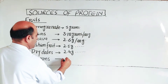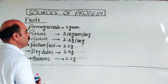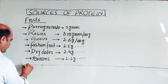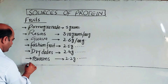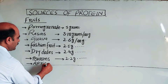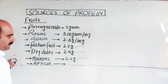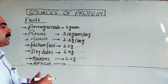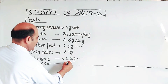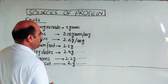Prunes contain 2.2 grams of protein per 100 grams. Then apricot, which contains 2 grams of protein per 100 grams.